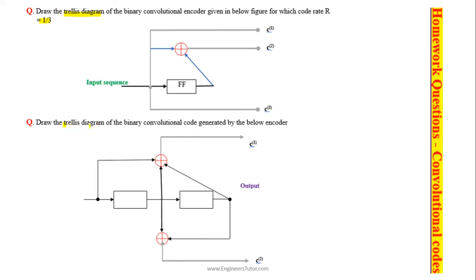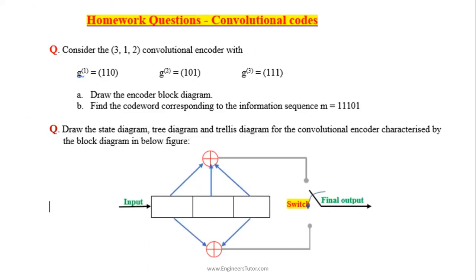Draw the trellis diagram for the encoder given in the diagram. Suppose a 3,1,2 convolutional encoder is given with g1, g2, g3 — these are the generator sequences or impulse responses of the convolutional encoder. Draw the block diagram and find the output for the given message signal.